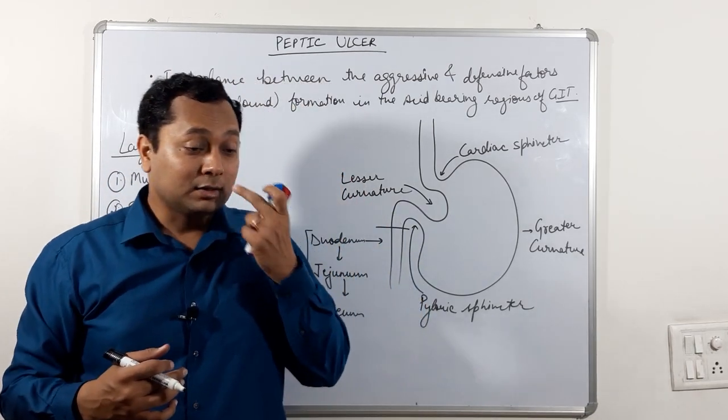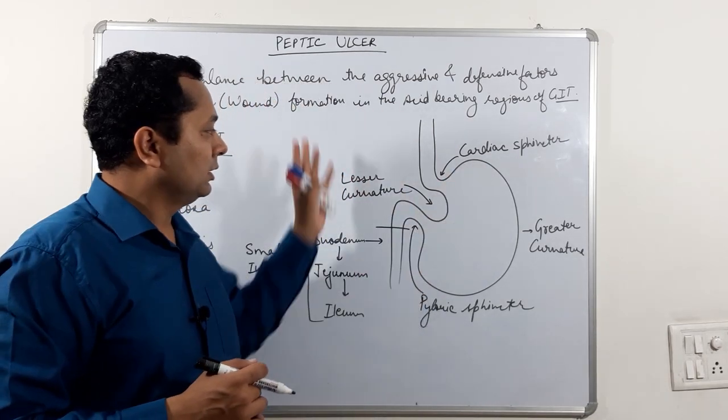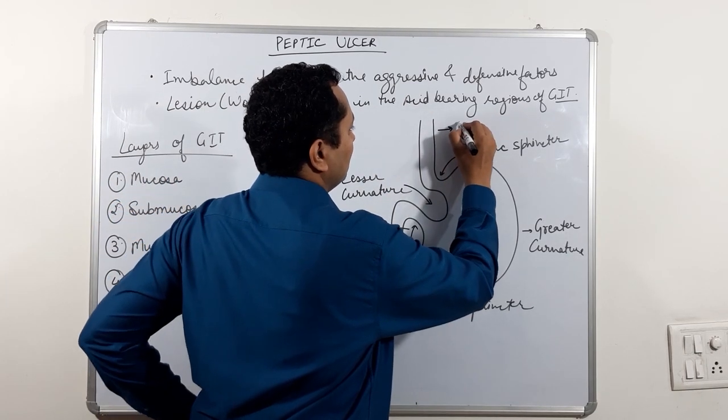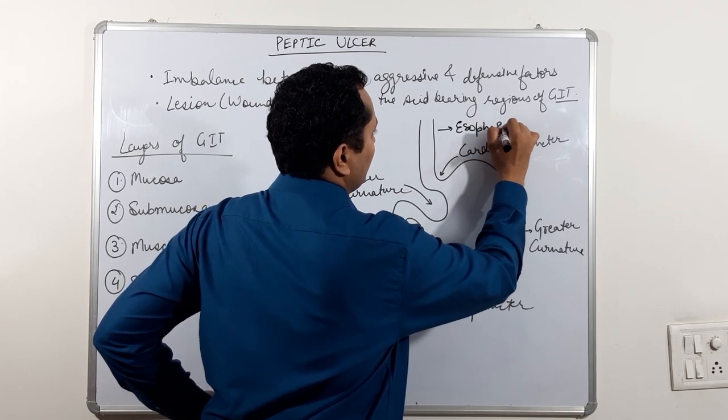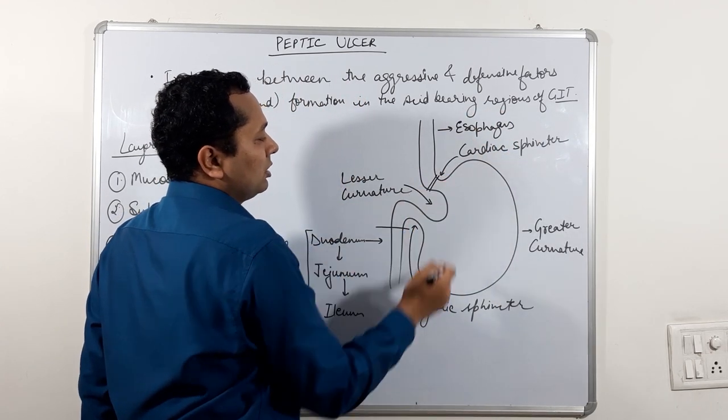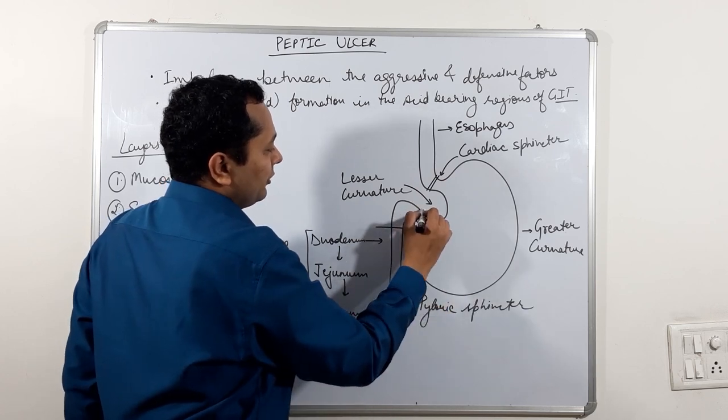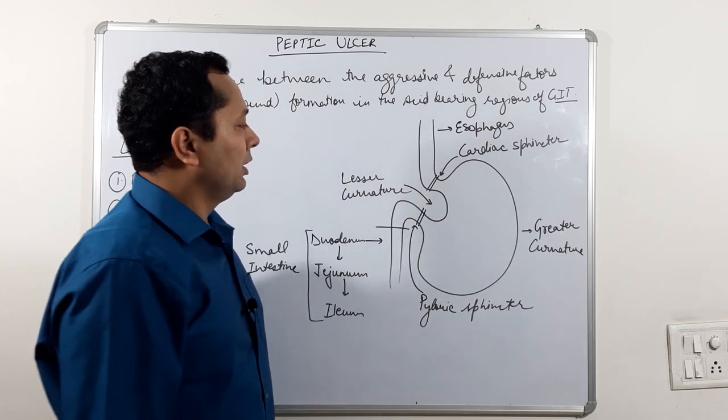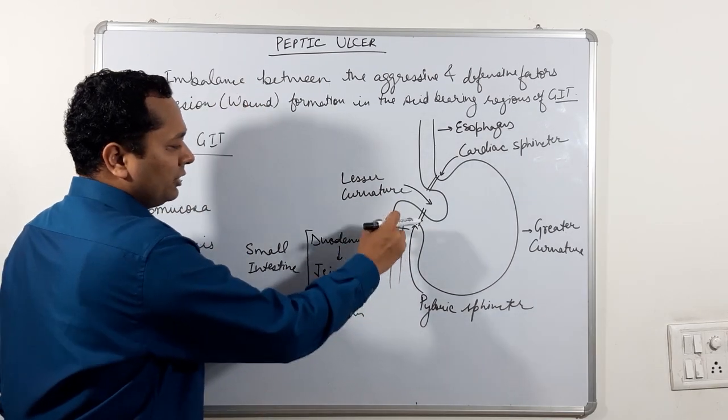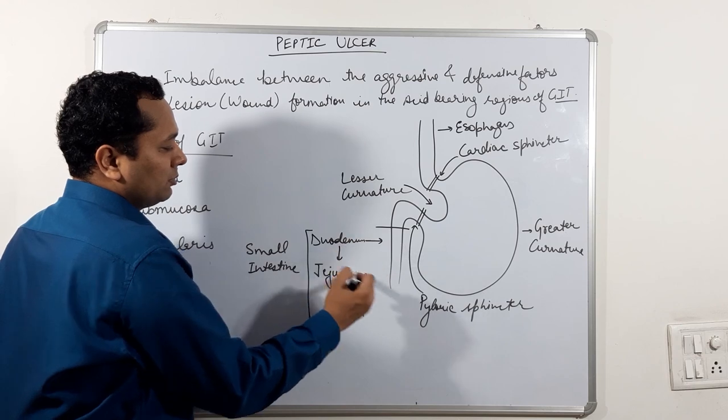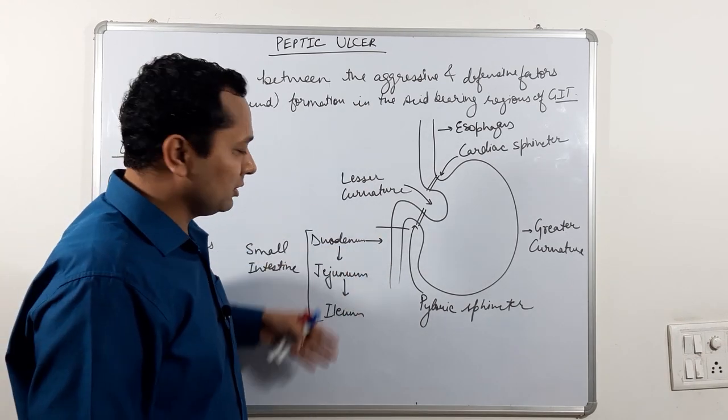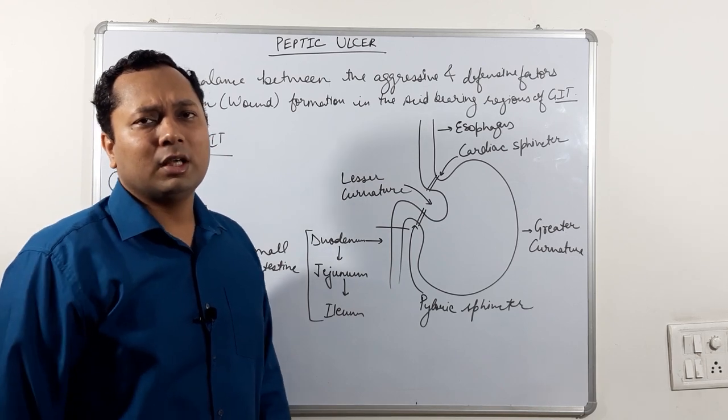If we see here that this is stomach, this is the esophagus, this is cardiac sphincter that closes the stomach here and this is the pylorus sphincter. This is the greater curvature, this is the lesser curvature. And this is the beginning of the intestine, the duodenum, then we have jejunum, then ileum. These three are the divisions of the small intestine.